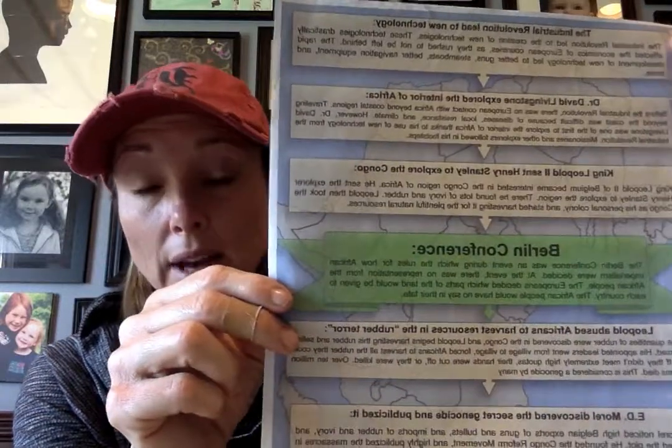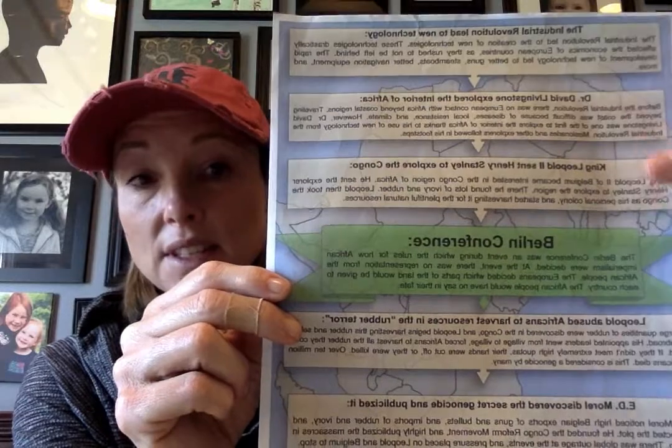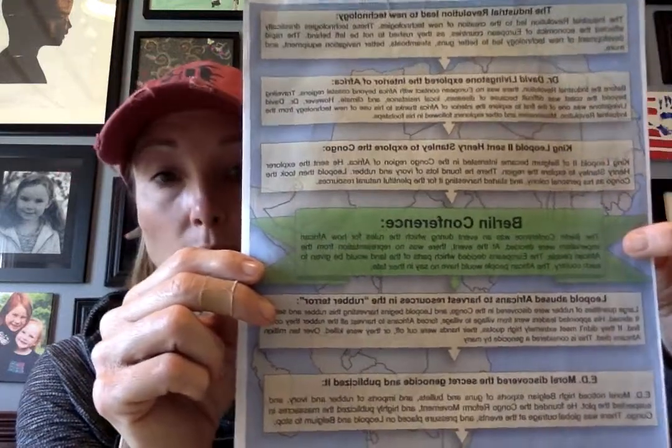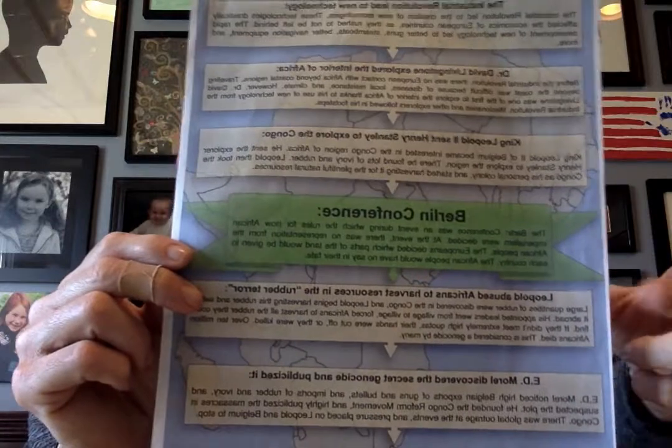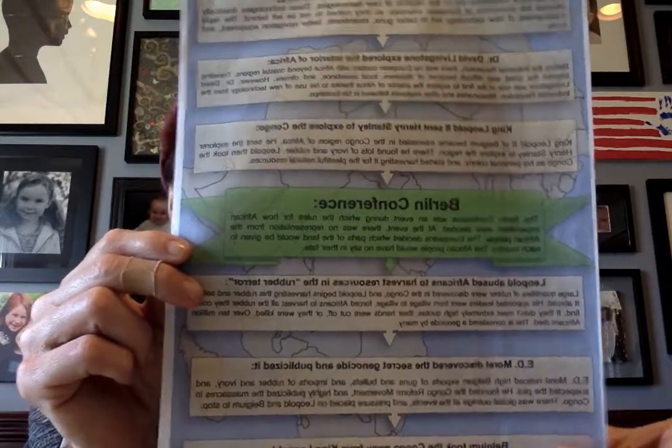You'll see with this project they pick general themes — like the Industrial Revolution, then Dr. Livingston, then King Leopold going to the Congo, then the Berlin Conference, then rubber, E.D. Morel, and Belgium fully taking over the Congo. But in your effects, I should hear about the entire section. The activity shouldn't focus on just one part of the section — it should cover the whole section at large.